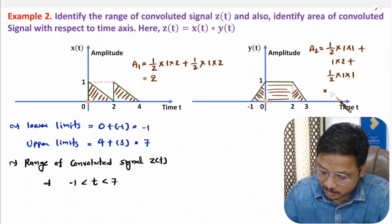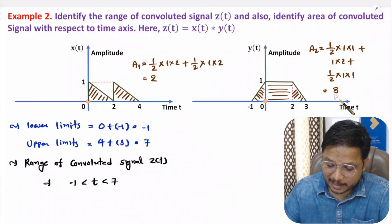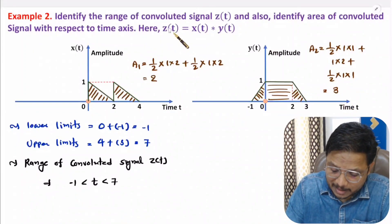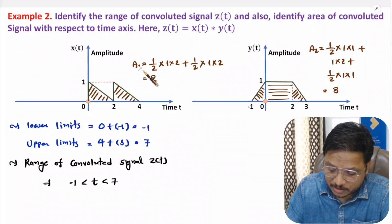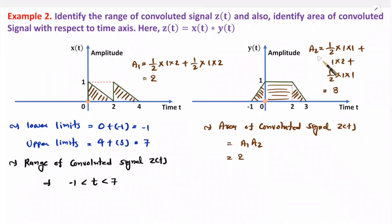The total area A2 equals 3. So the total area covered by Z(t) is A1 times A2, with A1 equal to 2 and A2 equal to 3, giving a total area of 6.